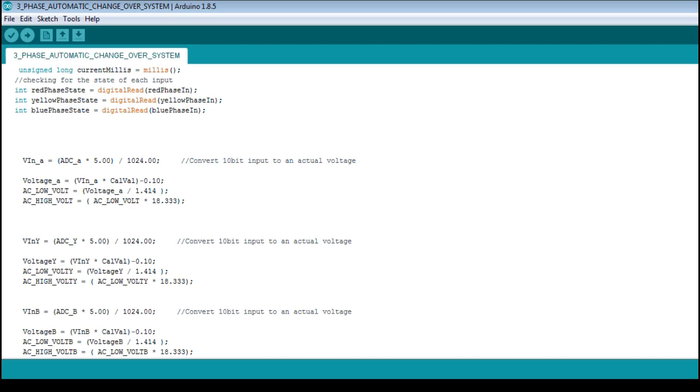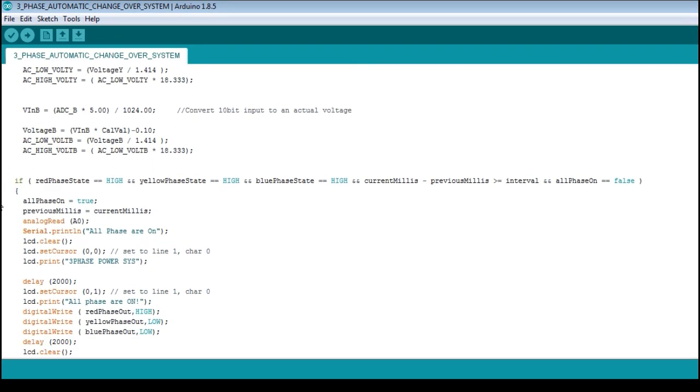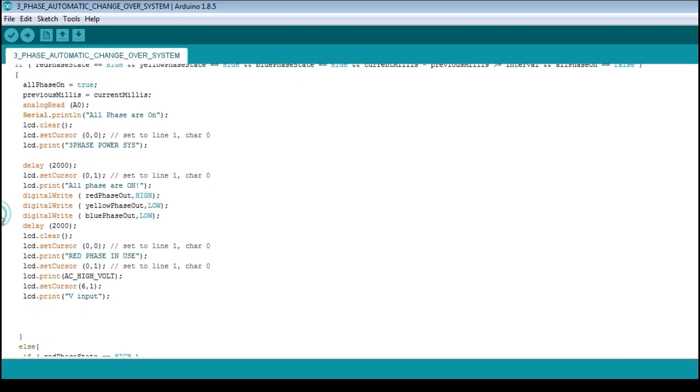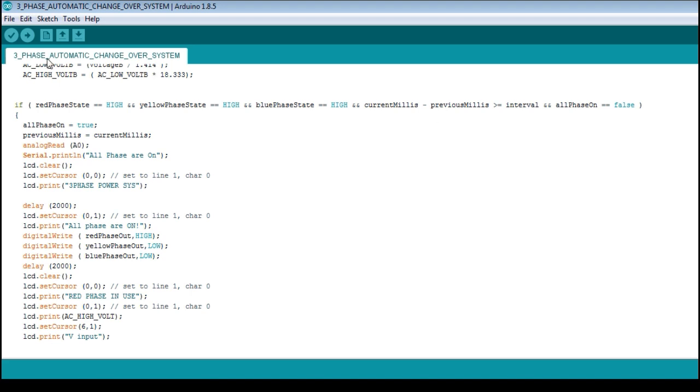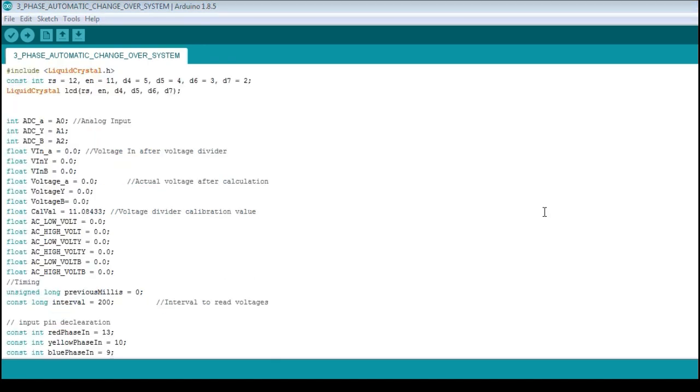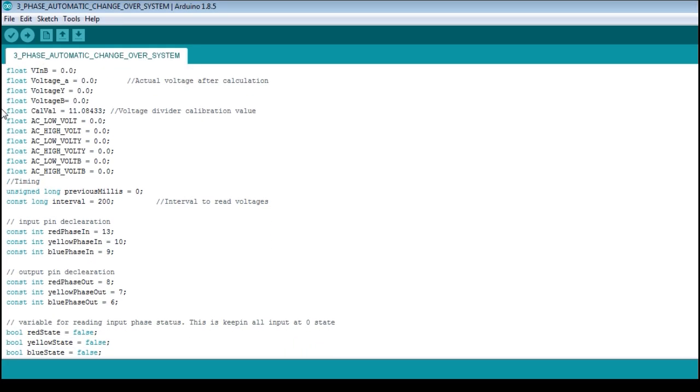Now, looking at the logic used for the three phase changeover system, I programmed the device such that at all intervals the system will be automatically active and that is achieved using the if statement. The lines of code are really easy to follow as I added comments in order to explain the lines better.